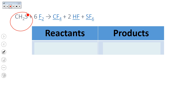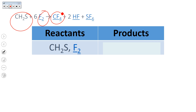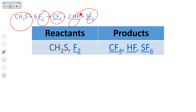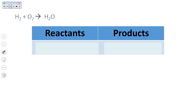Reactants: CH2S and F2. Products: CF4, HF, and SF6. Reactants: H2 and O2. Products: H2O.